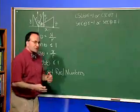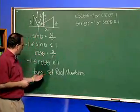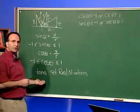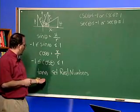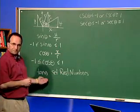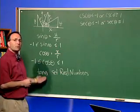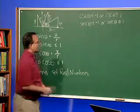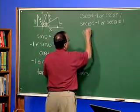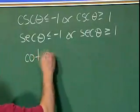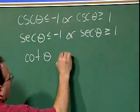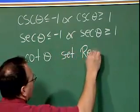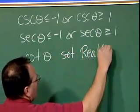Finally, to finish it off, cotangent of theta is the reciprocal of tangent of theta, which means that it will also be the set of real numbers. So cotangent theta, for the range, is the set of real numbers.